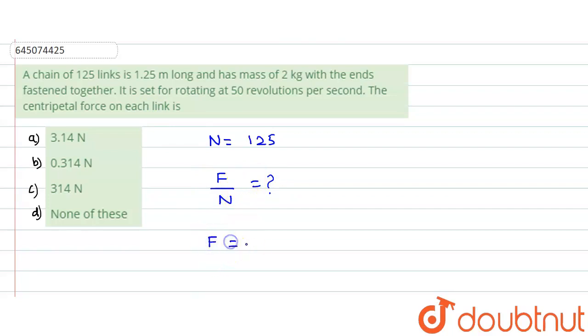Now what is the expression for centripetal force? Centripetal force is m r ω². This is the case of the centripetal force. Initially we would be having a long chain of length 1.25. Now we have converted this into a circle.